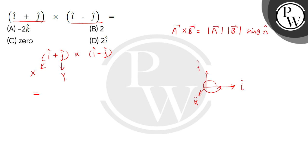So here we can see what we get using the distributive law: i cross i minus i cross j, then plus the third term j cross i, and the fourth term minus j cross j.